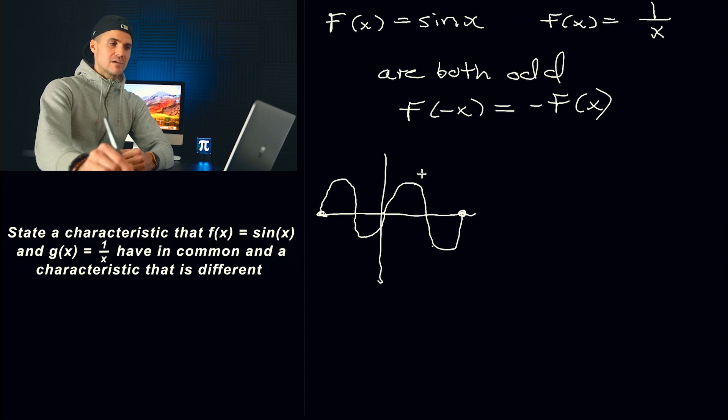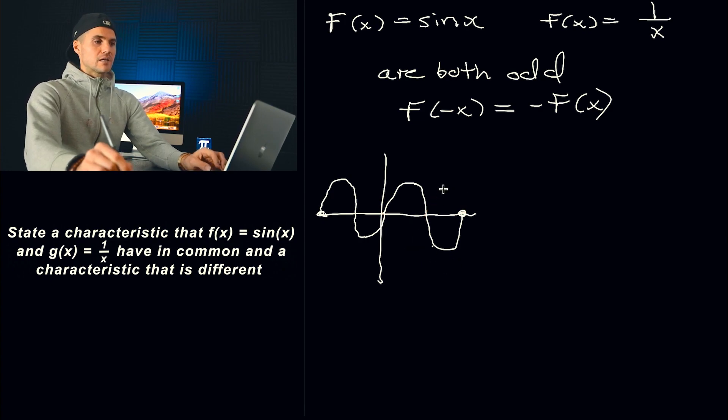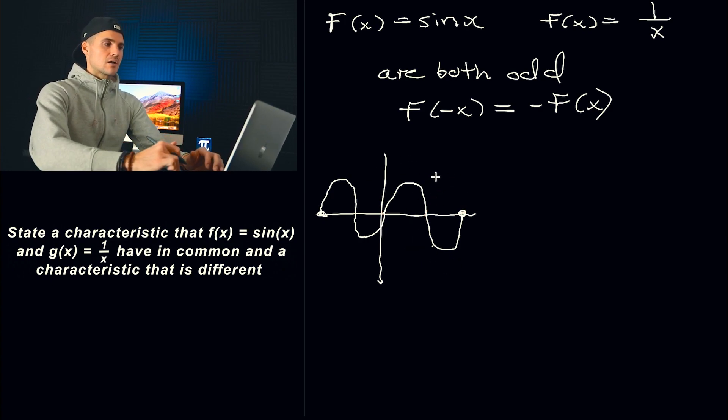So if we take this half here, let's maybe do it in a different color. So if I take this half, reflect it in the x-axis, I'd get this. And then if I take this red, reflect it in the y-axis, I'd end up with this other half like that. So you could see graphically that sine x is an odd function.